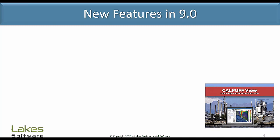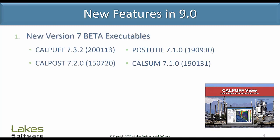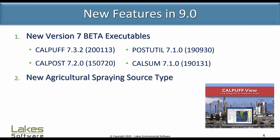CalPuffView version 9.0 was released within the last few weeks and we wanted to give you an opportunity to hear about the new features. The biggest change within CalPuffView version 9 is the inclusion of our new version 7 beta executables. These are the executables published by the CalPuff Modeling System team and have been incorporated into the program. One of the main features of these new executables is a new source type within the model for agricultural spraying.